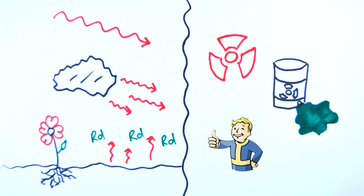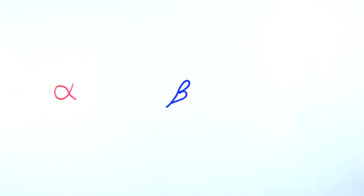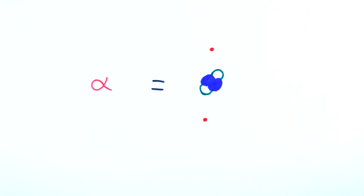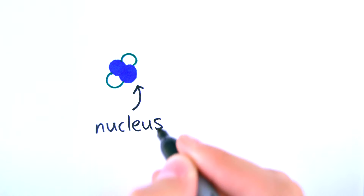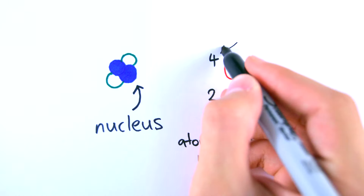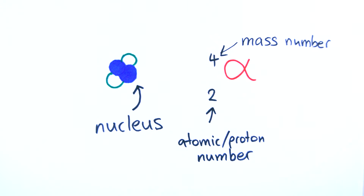There are three main types of radiation emitted from radioactive atoms: alpha, beta, and gamma radiation. Alpha radiation consists of alpha particles. An alpha particle is identical to the helium atom but without the electrons. So two protons and two neutrons are emitted from the nucleus, reducing the atomic number by 2 and the mass number by 4.